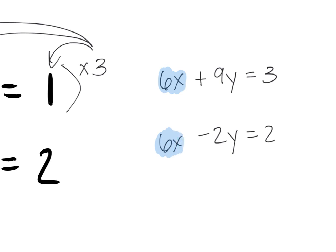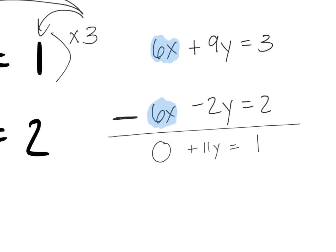Subtracting: 6x − 6x = 0. Then 9y − (−2y) = 9y + 2y = 11y. And 3 − 2 = 1. So 11y = 1. Divide by 11: y = 1/11.